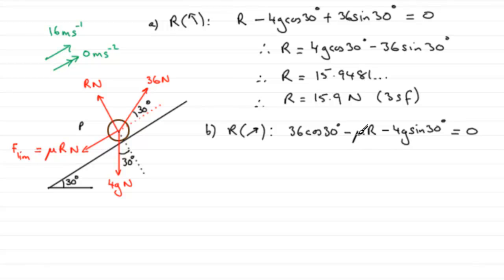We need to rearrange this for mu. We could add mu R to both sides to make it positive, so we'd have 36 cos 30° minus 4g sine 30° equals mu R. Then just divide by R, giving us mu equals 36 cos 30° minus 4g sine 30° all divided by R.